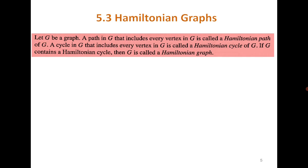Let G be a graph. Then a path that includes every vertex in G is a Hamiltonian path of G. If we consider the following graph, you can see that it does not have a Hamiltonian path or a Hamiltonian cycle. Whatever you do, you cannot have a cycle or a path without repetition of vertices.